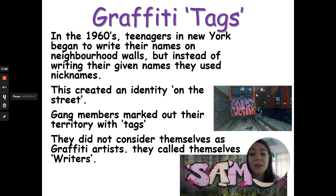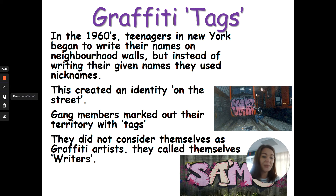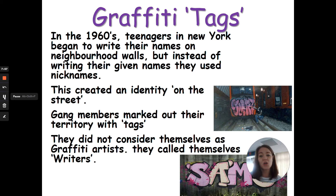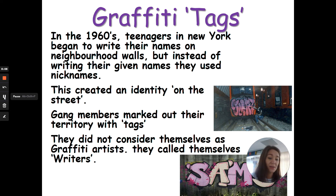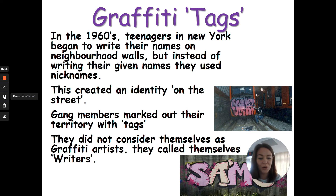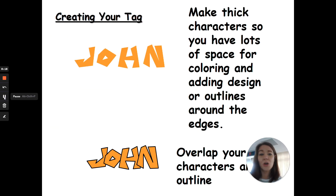Looking at graffiti tags: in the 1960s, teenagers in New York began writing names on neighbourhood walls — not their own names but nicknames — which created a street identity. Gang members used this to mark out their territory with tags, recognised by using different colours. They didn't consider themselves graffiti artists — they simply called themselves writers. So today's task is to have a go at creating your own tag.